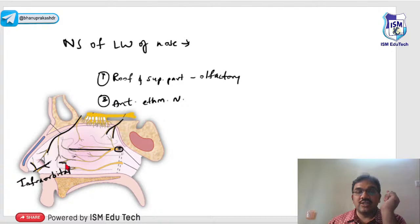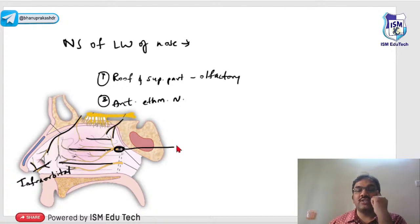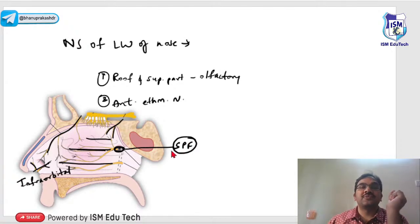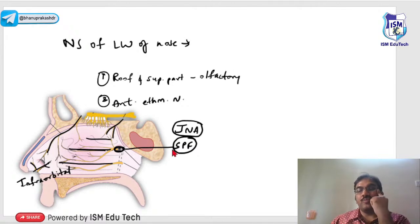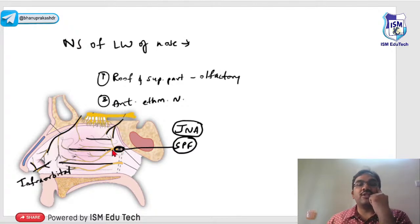The sphenopalatine foramen lies posterior to the middle turbinate. The inferior, middle, and superior turbinates are arranged in position. The significance of the sphenopalatine foramen is that the origin of JNA — juvenile nasopharyngeal angiofibroma — is supposed to arise from the mucosa overlying this foramen.